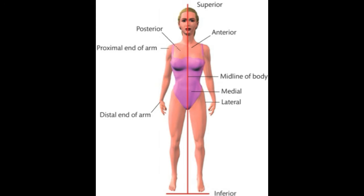Next we have above and below. Superior means above and inferior means below. It doesn't necessarily mean right at the top or right at the bottom. For instance, the patella — the kneecap — is superior to the metatarsals because the metatarsals are below. So when looking at a group of bones next to each other, we can say one is superior or inferior to another.